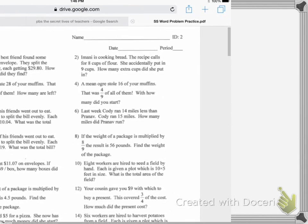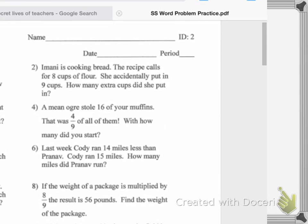Let's look at number 2. Imani is cooking bread. The recipe calls for 8 cups of flour. She accidentally put in 9 cups. How many extra cups did she put in? Alright, this should be easy for everybody. Let's go through the steps. So, it says to box the question. How many extra cups did she put in? That's the question. We're going to underline the important numbers. So we have 8 cups of flour and 9 cups of flour. We're going to underline the important vocabulary that tells us what operation we're actually doing. How many extra?